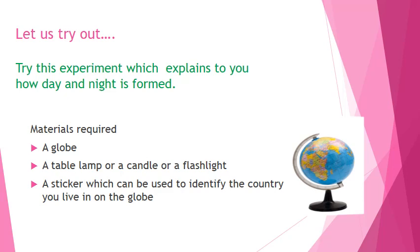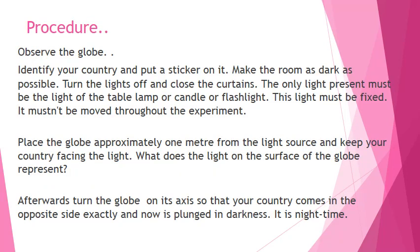Now let us try this out. This experiment explains how day and night is formed. Materials required: a globe, a table lamp or a candle or a flashlight, and a sticker to identify the country you live in on the globe. Observe the globe, identify your country, and put a sticker on it. Make the room as dark as possible — turn the lights off and close the curtains. The only light present must be the table lamp, candle, or flashlight, and it must be fixed throughout the experiment. Place the globe approximately one meter from the light source and keep your country facing the light.